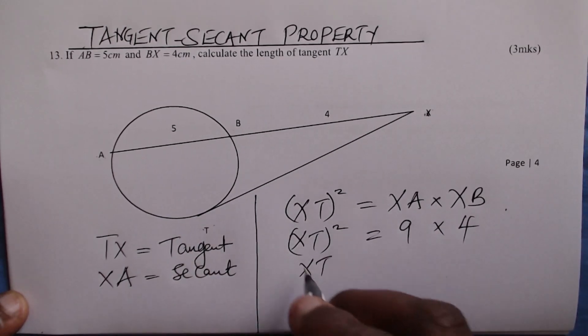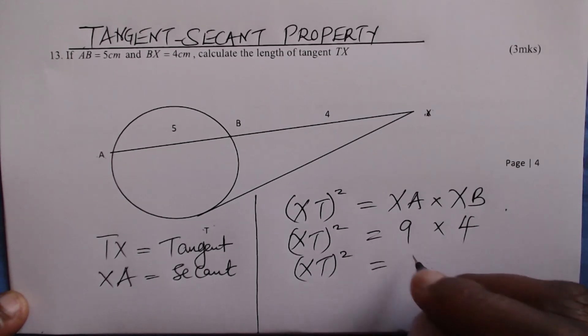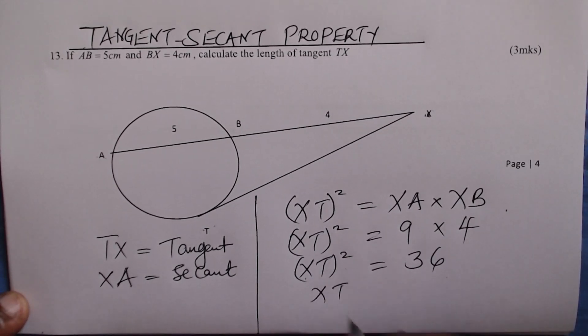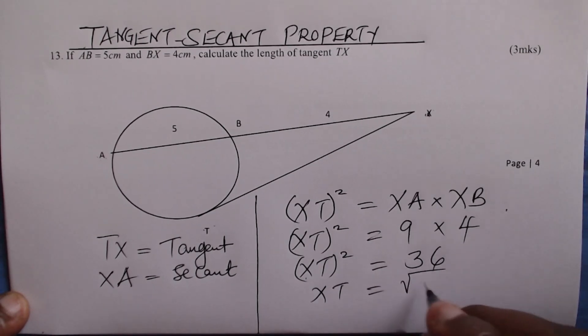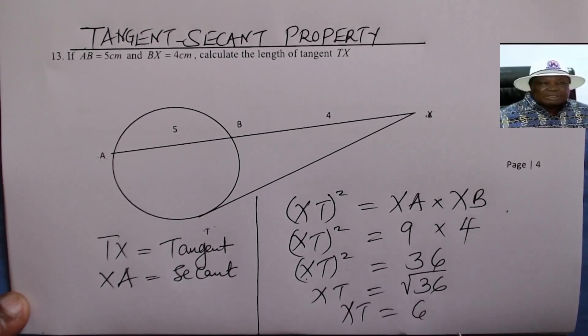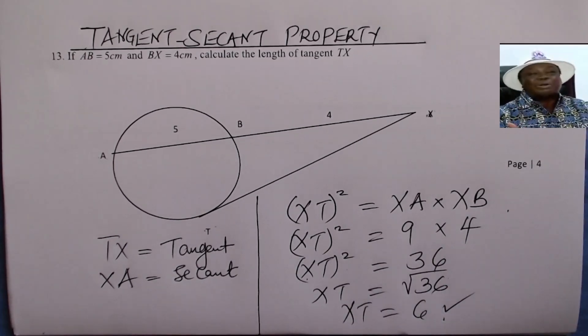So XT squared equals 36, which is 9 times 4. Then XT is obtained by taking the square root of 36. This gives XT, or TX, as 6. Now you're supposed to work out that question.